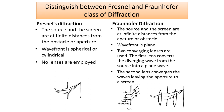In the Fresnel class of diffraction, the source of light and the screen are in general at a finite distance from the diffracting aperture. Whereas in the Fraunhofer class of diffraction, the source and the screen are at infinite distance from the aperture. This is achieved by placing the source on the focal plane of a convex lens and placing the screen on the focal plane of another convex lens, so two converging lenses are used. The first lens converts a diverging wave from the source into a plane wave, while the second lens converges the waves leaving the aperture to the screen. In Fresnel diffraction, no lenses are employed and the wavefront is spherical or cylindrical.